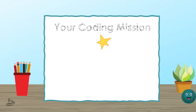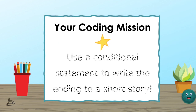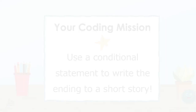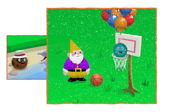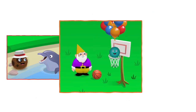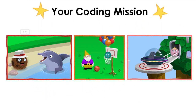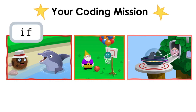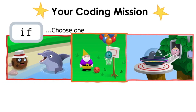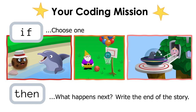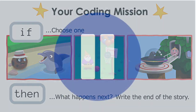Here's your mission: combine programming and storytelling. Use a conditional statement to write the ending of a short story. Here's how it works — there are three picture prompts. Think of these as the multiple options in a choose-your-own-adventure book. Ask yourself what would happen if one of these conditions were true. Choose one of the images, then write a short story describing the ending. Get creative — the possibilities are endless. You can pause the video here to choose your picture and write your story.